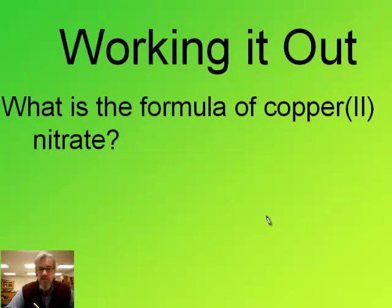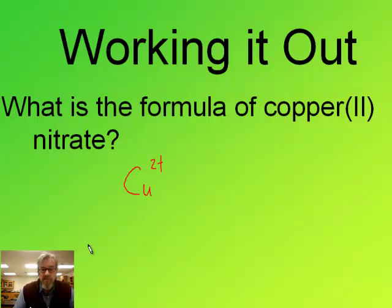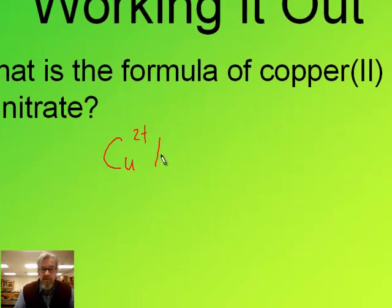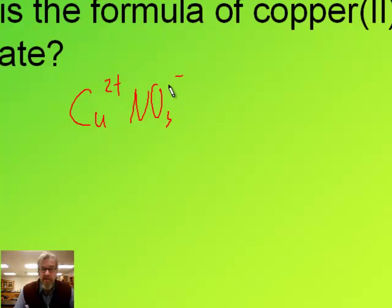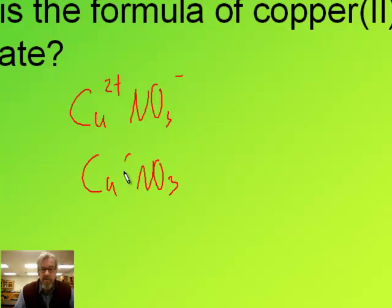Try this one: what's the formula of copper two nitrate? Copper two means it's two plus. You look up nitrate on your polyatomic ion sheet and find that it's NO3 with a one minus charge. When we charge swap, copper gets a one and nitrate gets the subscript two, and we put parentheses around it.